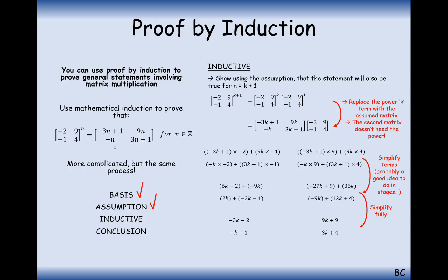The way we want to write our final answer is like the original matrix but with k+1 replacing each n. So each n gets replaced by k+1. We check: can we simplify the top-left to −3(k+1)+1? Yes. Top-right to 9(k+1)? Yes. Bottom-left to −(k+1)? Yes. Bottom-right to 3(k+1)+1? Yes. So we write the final answer with k+1's throughout — that's the inductive step proved.